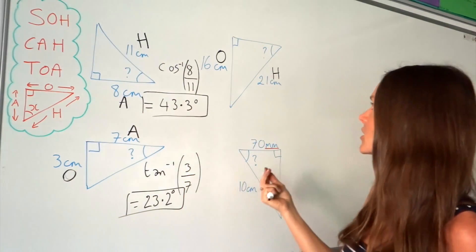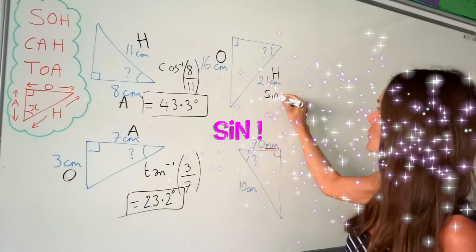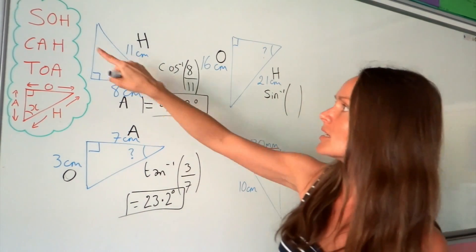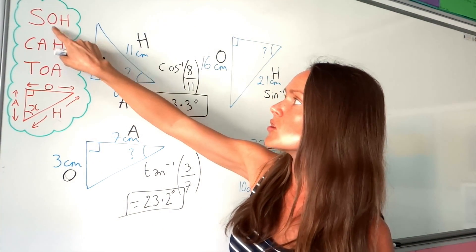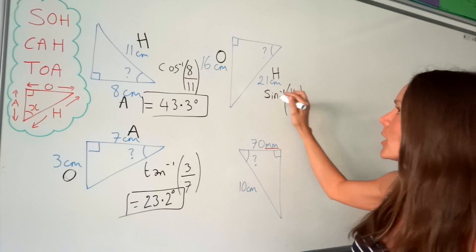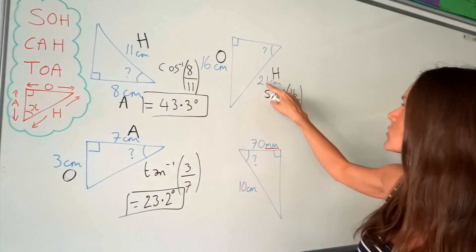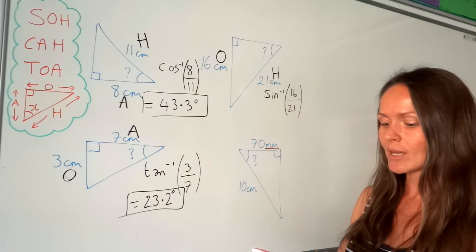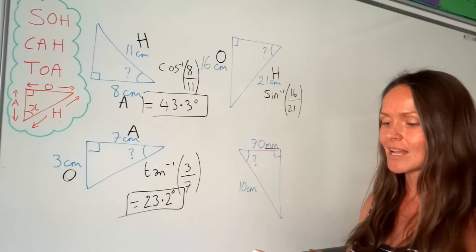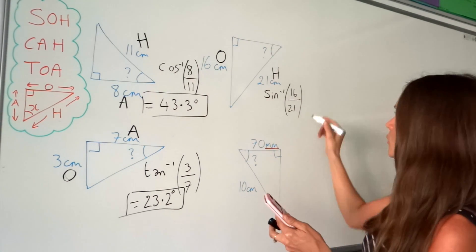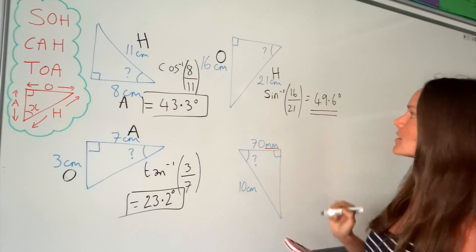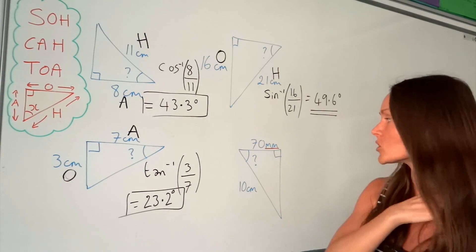This time you need sine⁻¹, so press shift followed by sine. Then divide opposite by hypotenuse: the opposite is the numerator, which is 16, and the hypotenuse is 21. Put sine⁻¹(16/21) into your calculator — you can use the fraction button or press divide — and rounding to one decimal place you get 49.6 degrees.